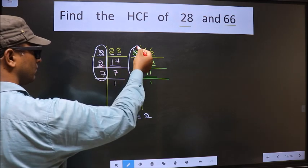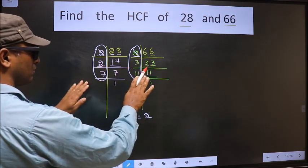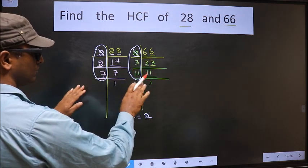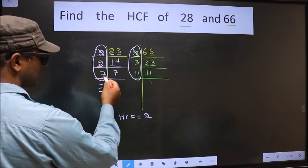Next number is 2. Do we have 2 here? No. Next number is 7. Do we have 7 here? No. No more numbers are left.